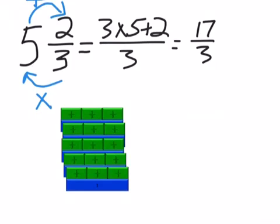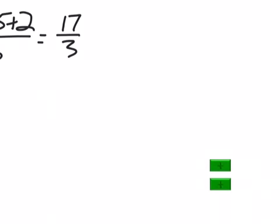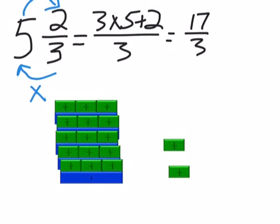And then we have these two thirds way over here. I had them in time out. And those two thirds were already in fraction form. So we just add them on at the end. Five and two thirds equals seventeen thirds.